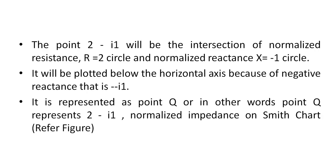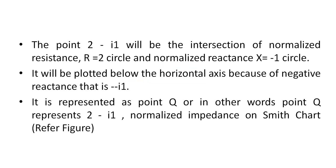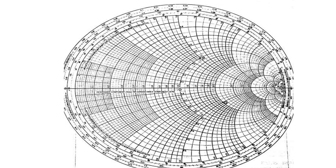The point 2 minus j1 will be the intersection of normalized resistance R equals 2 circle and normalized reactance X equals minus 1 circle. It will be plotted below the horizontal axis because of negative reactance, that is minus j1. It is represented as point Q, which represents 2 minus j1 normalized impedance on Smith chart. This is point Q for the case 2 minus j1, and this is point P for the case 1 plus j1.